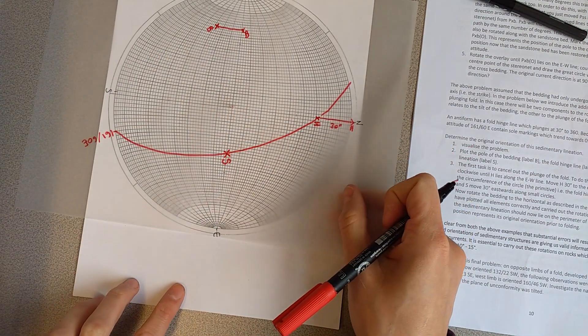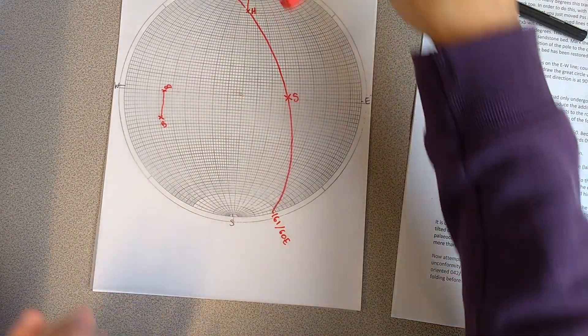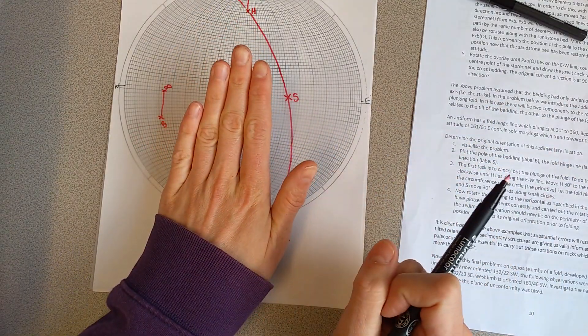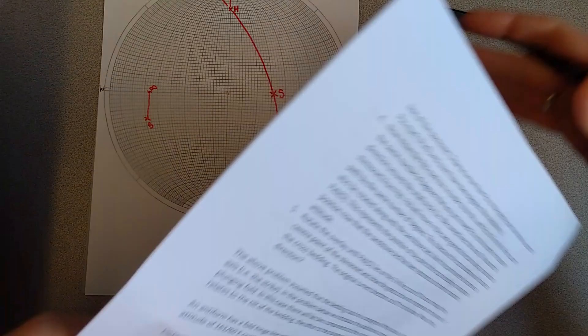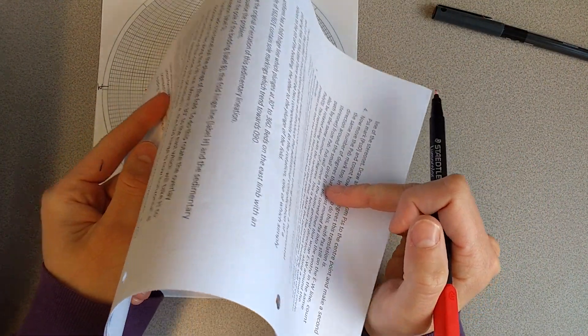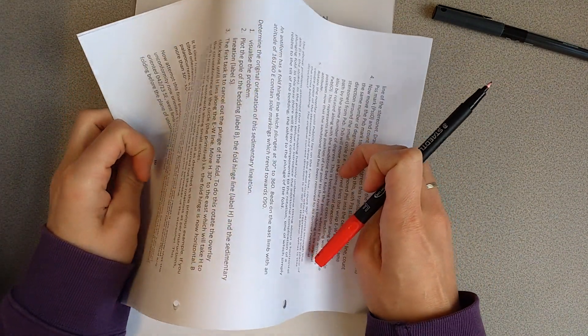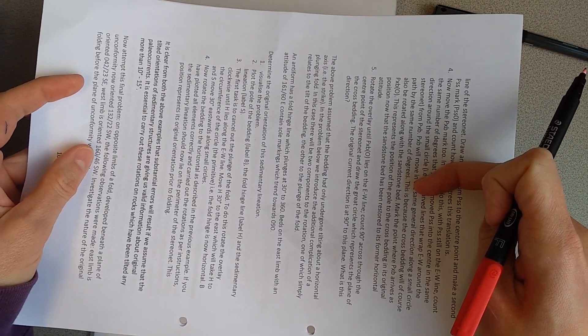So now what we're going to do is we are going to, so we've now basically, we've stopped the fold plunging. So the plunge is, the fold is now flat. So let me just show you with a piece of paper. So we did have a plunging fold. So we've now unplunged our fold, so it's now sort of upright.